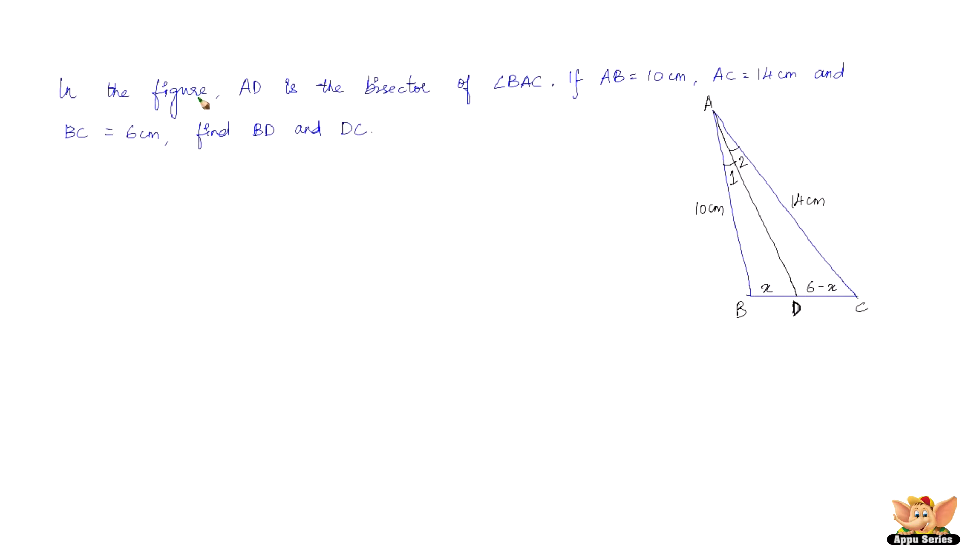So here we've got a question which reads like this. In the figure, AD is the bisector of angle BAC or simply angle A. If AB equals 10 centimeters, AC equals 14 centimeters and BC equals 6 centimeters, find BD by DC.